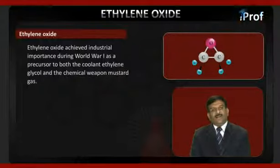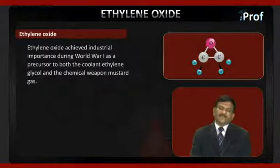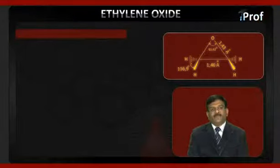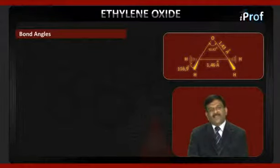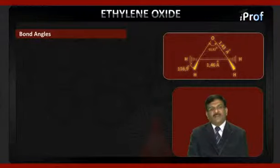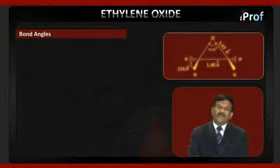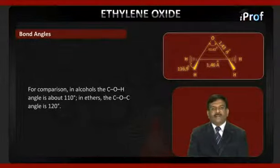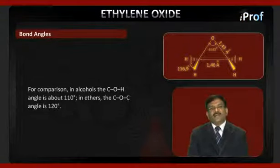The epoxy cycle of ethylene oxide is an almost regular triangle with bond angles of about 60 degrees and a significant angular stress corresponding to an energy of 105 kilojoules per mole. For comparison, in alcohols the C–O–H bond angle is about 110 degrees, and in ethers the C–O–C angle is around 120 degrees.